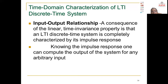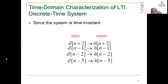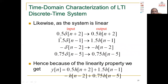Knowing the impulse response, one can compute the output of the system for any arbitrary input. Here we have denoted the impulse response as H[n] and computed the output Y[n] for various inputs. Since the system is time invariant, shifting the impulse by 2 causes the output response to also shift by minus 2. Similarly, an impulse shifted to n equals 1 gives a response shifted to n equals 1. The scaled impulse input produces a scaled and shifted output response.